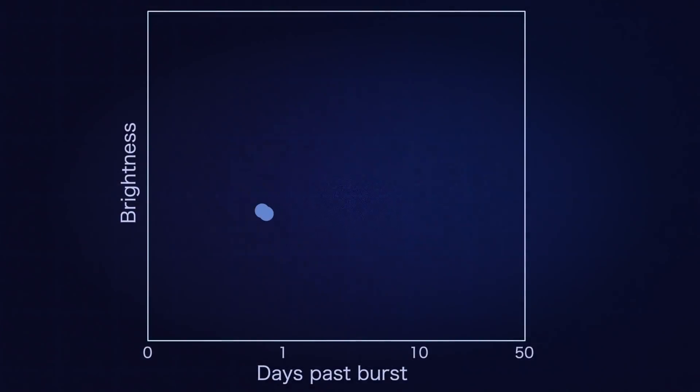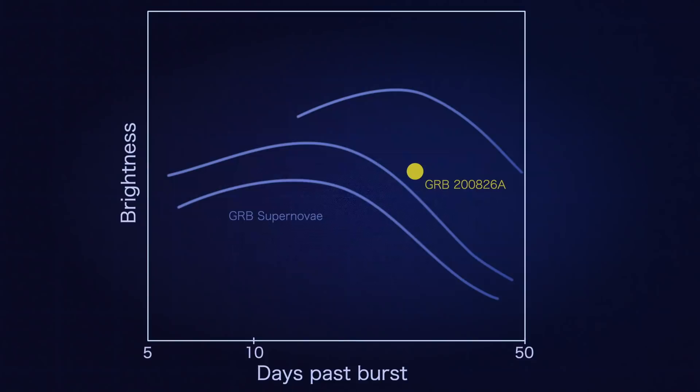After a few weeks when the afterglow had decayed, ground-based observatories confirmed the presence of a brightening supernova. This means the GRB must have come from a massive collapsing star, not a merger.